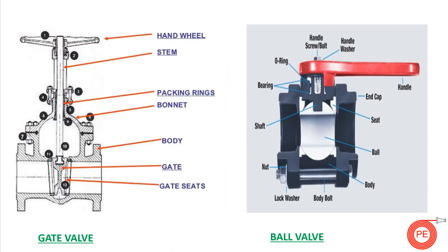Here is a detail of the gate valve parts. The handwheel is the rotating part. Connected to it is the stem, and there are packing rings to prevent the fluid from leaking outside. The bonnet is the main cast body inside which the whole valve system is placed. This is the main body of the valve. The gate — or wedge-shaped material — moves up and down inside the pipe. There are also gate seats to prevent leakage, since metal-to-metal contact is not 100% leak-proof, so seat materials are provided.